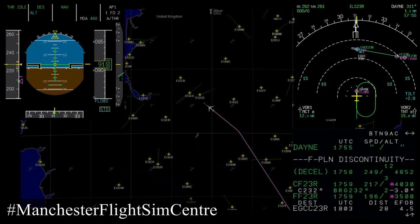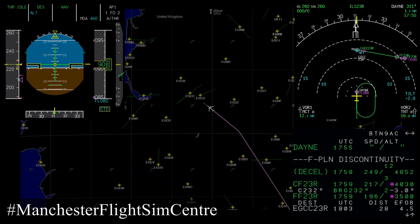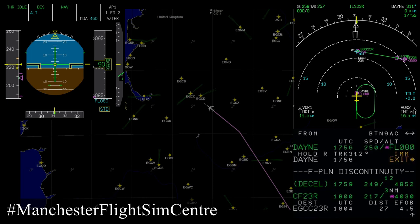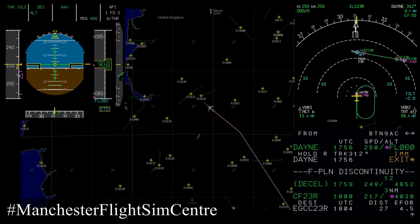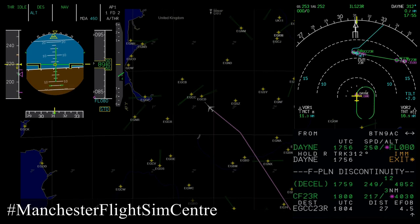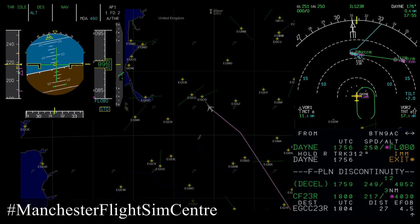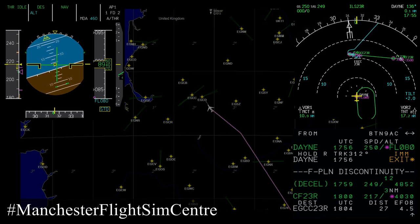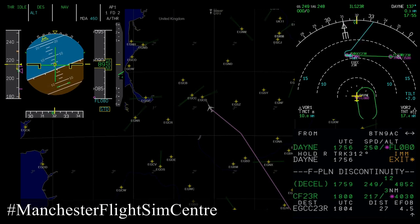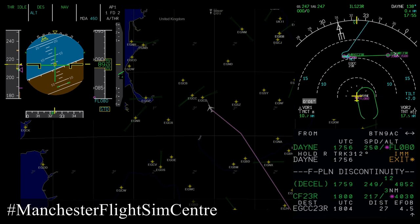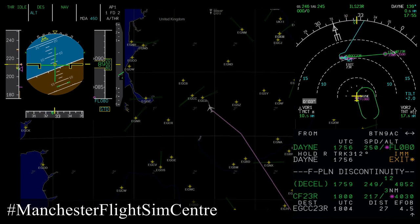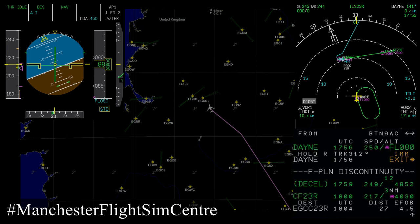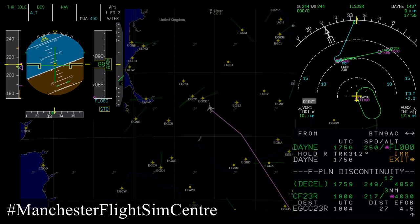So we're approaching Dane now, about to enter the hold. As you can see, we're going to enter the hold at Dane with a direct entry, which involves flying to Dane and then proceeding on the outbound leg. The speed is now reducing to a sensible hold speed — in this case a maximum endurance speed, which is approximately green dot. As we overfly Dane, we programmed in a right-hand turn, so the aircraft will enter the right-hand holding pattern at Dane.